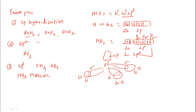In NH3, nitrogen has one lone pair. The geometry is based on SP3 hybridization, but due to the presence of this lone pair, the geometry becomes distorted to some extent. So NH3 shows pyramidal geometry. Even though hybridization is SP3, the molecular geometry is different from tetrahedral.